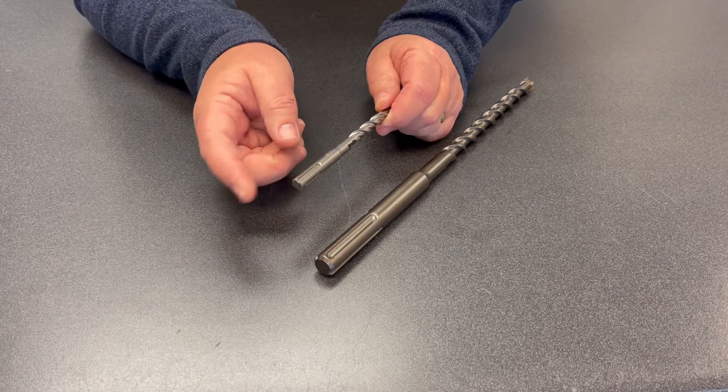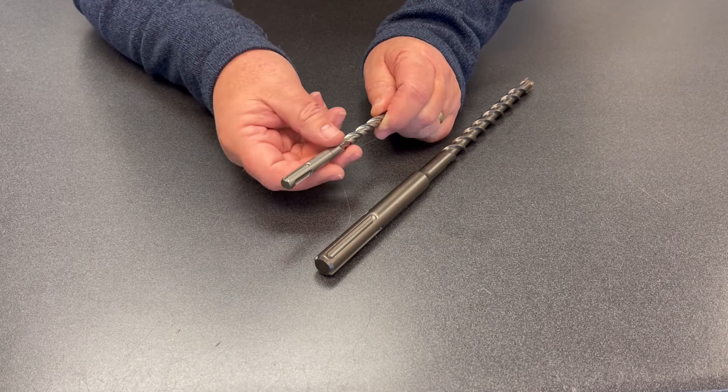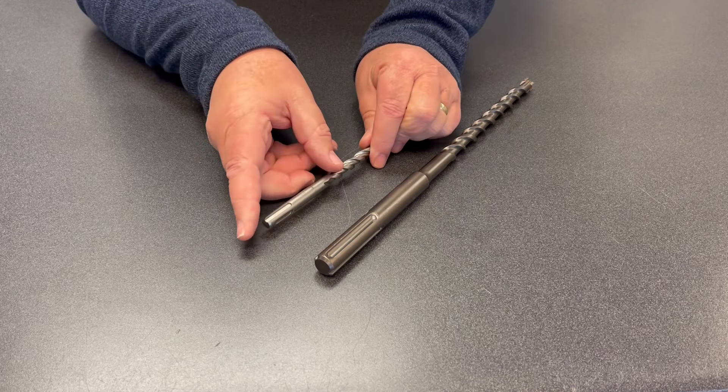So if you have an SDS Plus, the part that goes into your rotary hammer is going to be about three-eighths of an inch, and that'll help you determine if you have a Plus or Max.